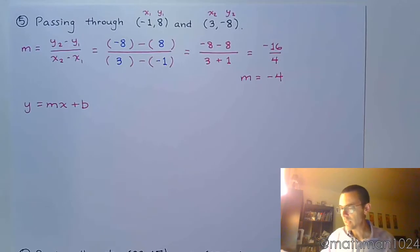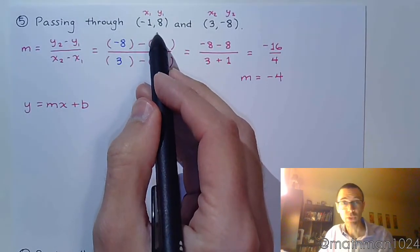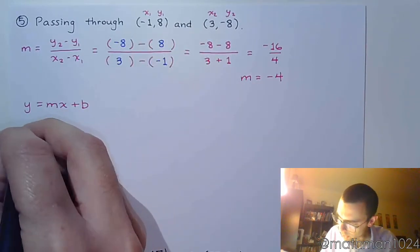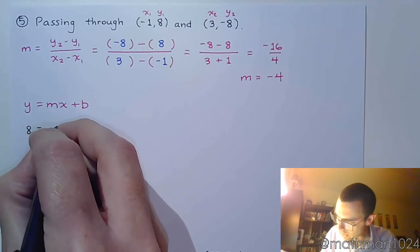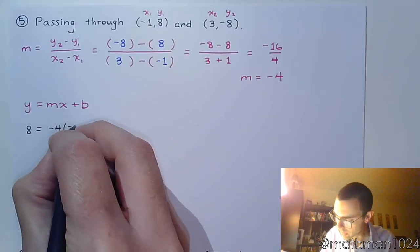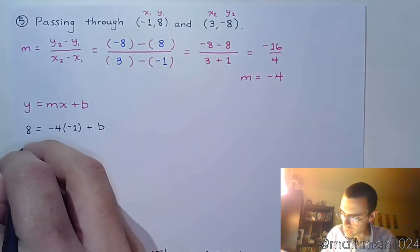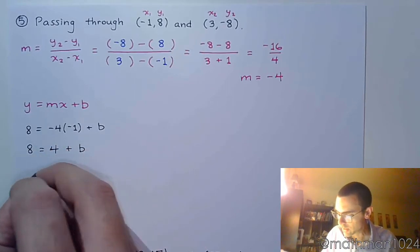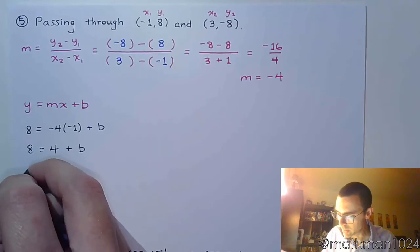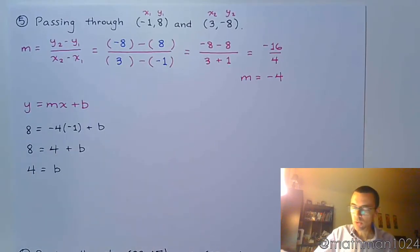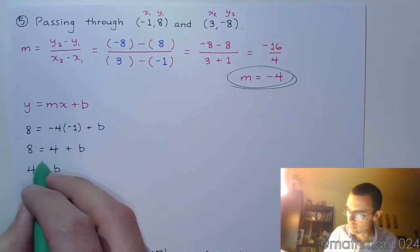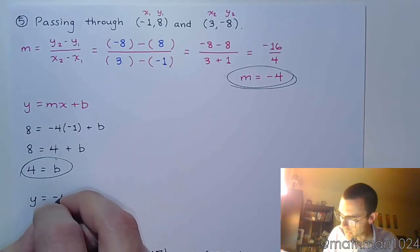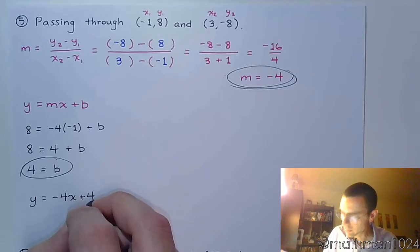So first of all, let's use negative 1, 8. I said the ordered pair doesn't really matter if I use this or that. So this is the first one, let's just use that. So my y value is 8, my slope is negative 4, and my x value is negative 1. So we get 8 is equal to 4 plus b, subtract the 4, and b equals 4. So taking these two pieces of information together, that's going to give me the equation y equals negative 4x plus 4.